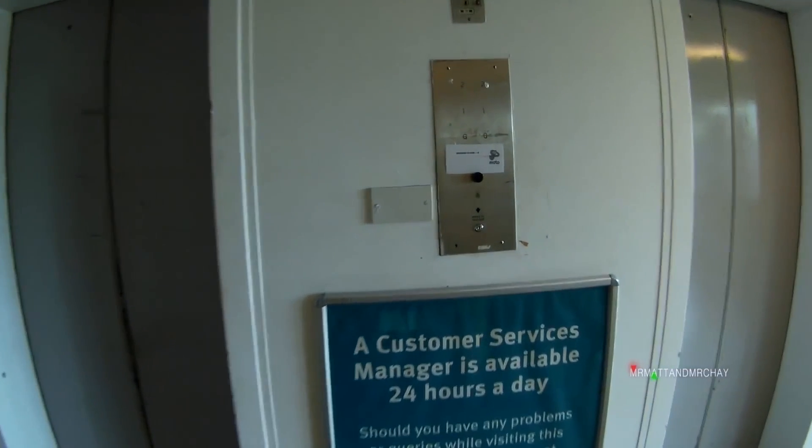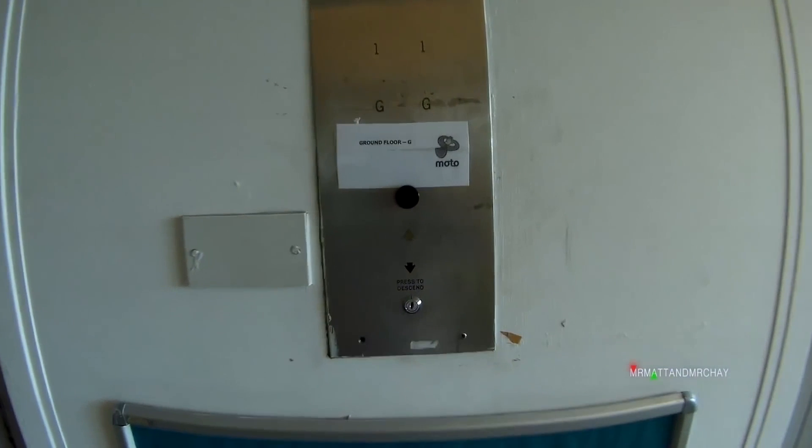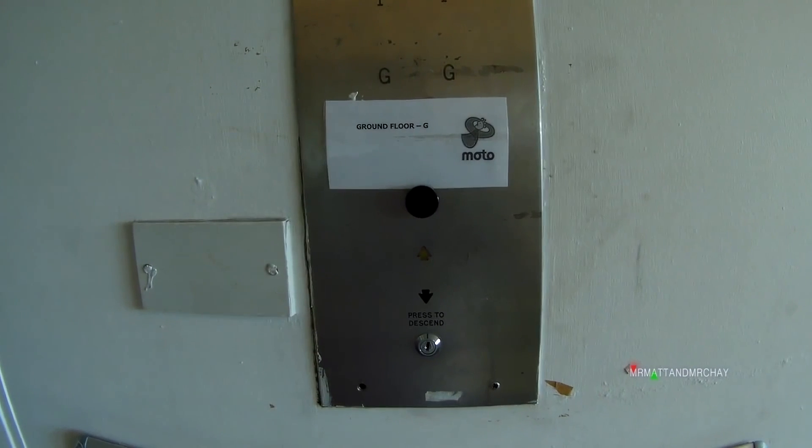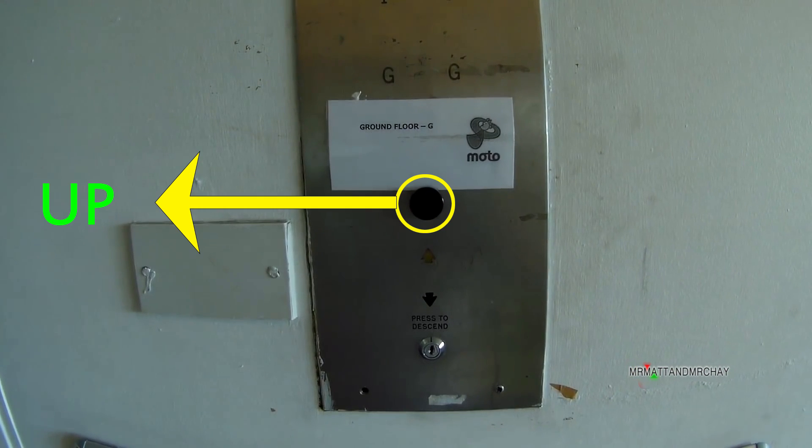On a duplex Otis system, the call logic worked like this. The up buttons connected to the left lift, the down buttons connected to the right lift. Sometimes this can be the other way around, but the principle would still be the same.